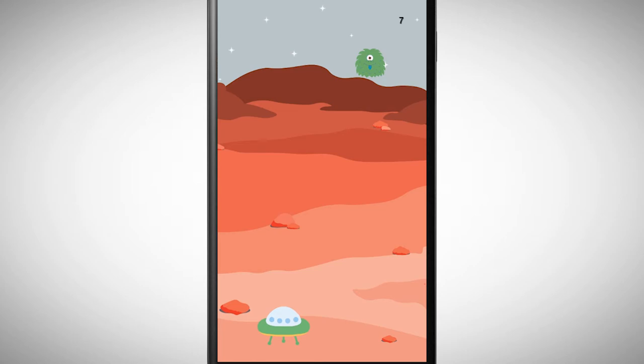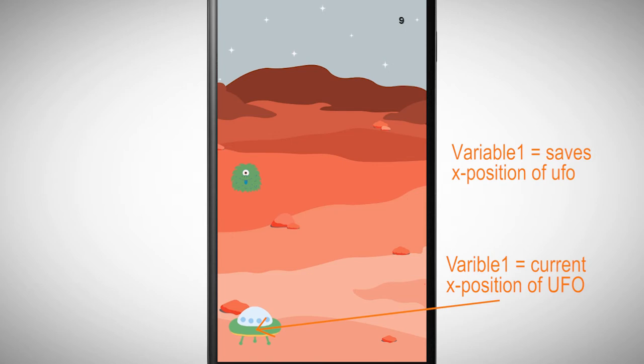Here's a tip on how to make the star appear at the UFO's position. First you need a variable. Every time you touch the screen, this variable will be set to the value of the x position of the UFO.